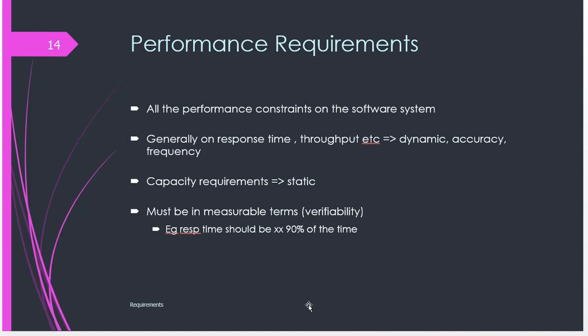Non-functional requirements look at how the system is supposed to function. With functional requirements we look at what the user requires, but with non-functional requirements we look at the environment that the system requires to be able to do its job. These can be covered by performance requirements — things like response time, throughput, and capacity. These do not affect the functions of the system but affect how well the system works, how reliable it is, and how capable it is of taking a big load.